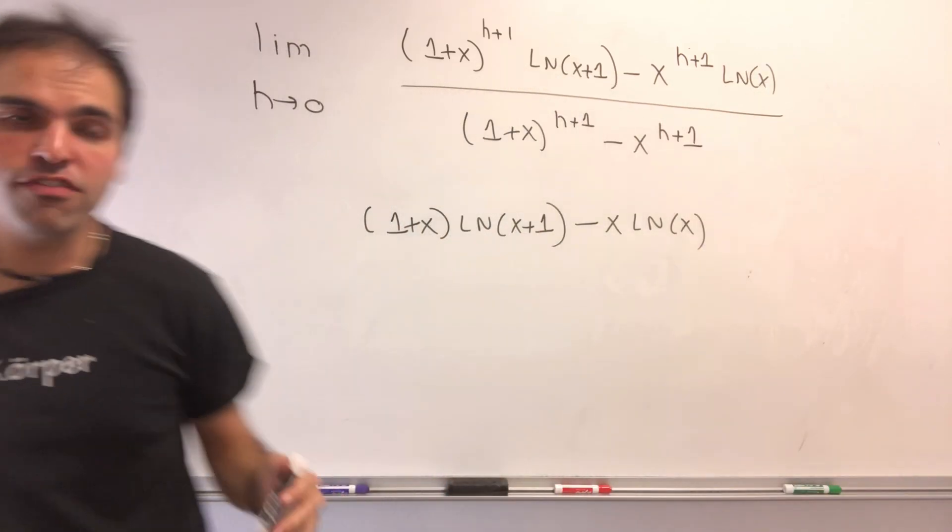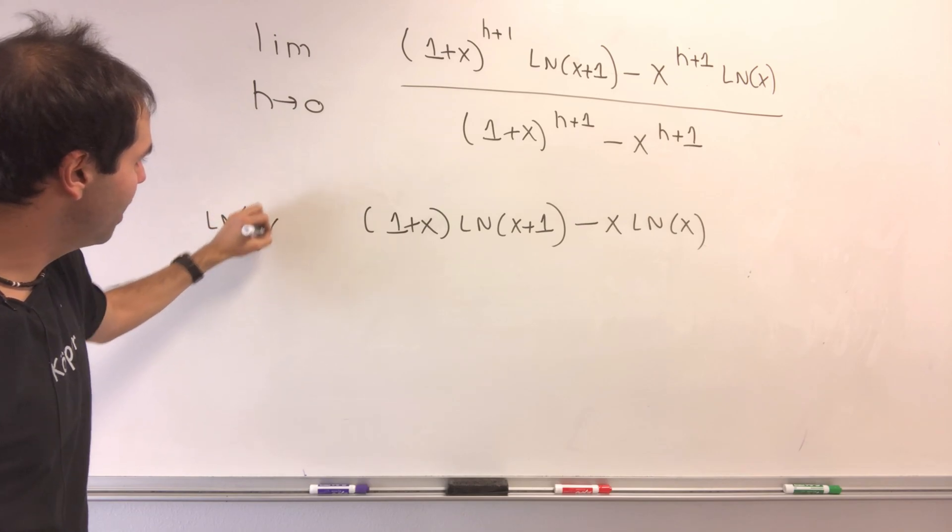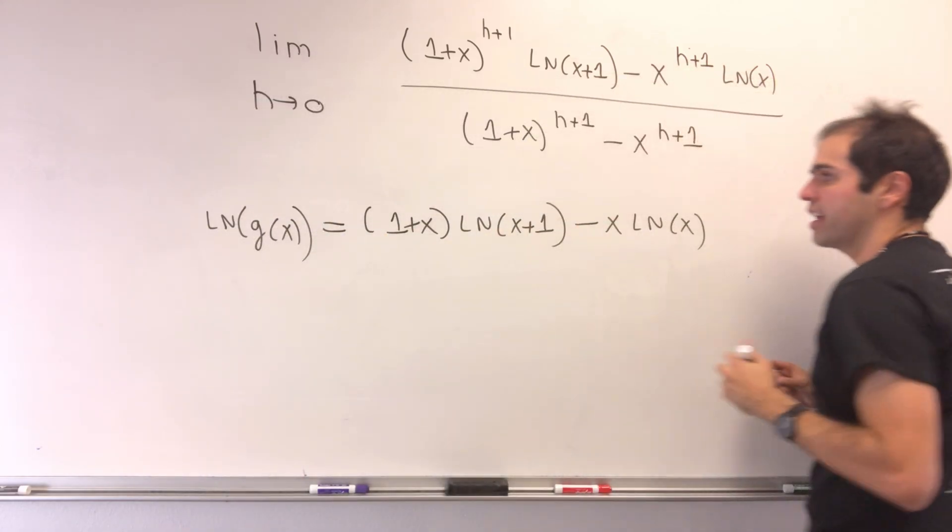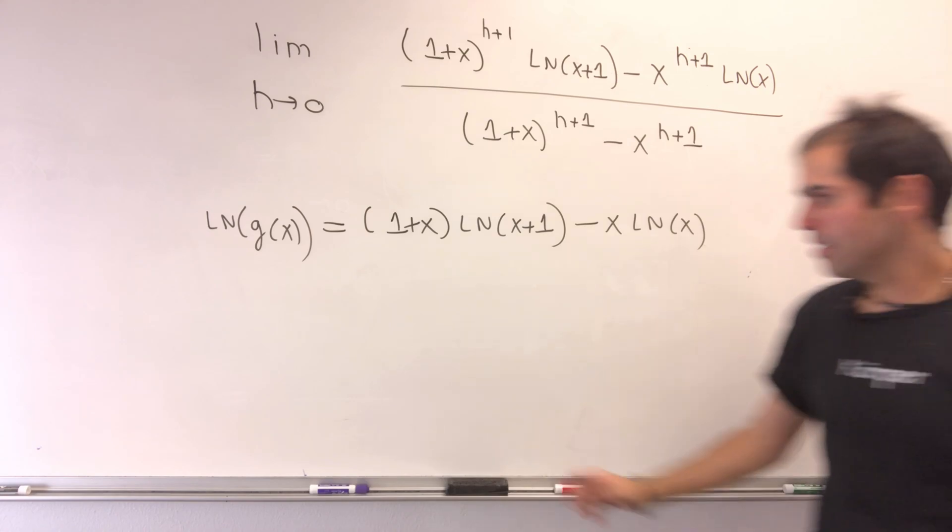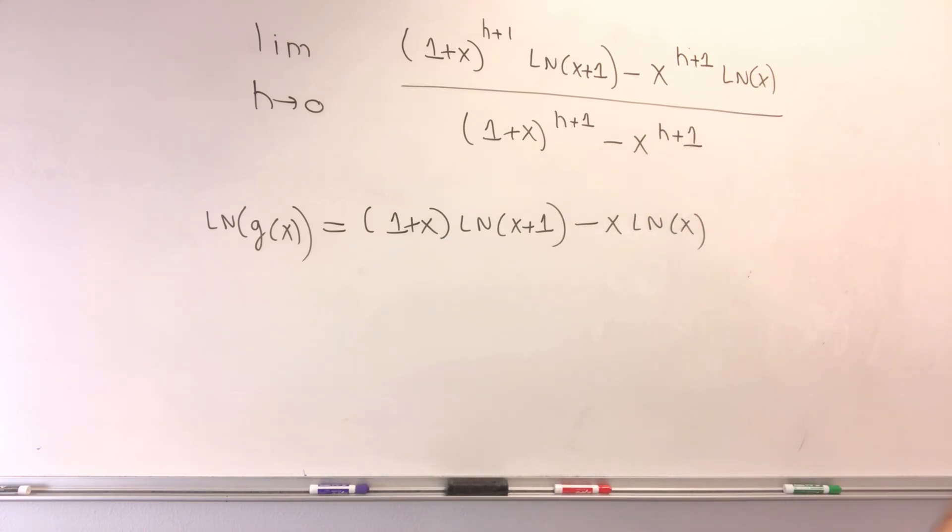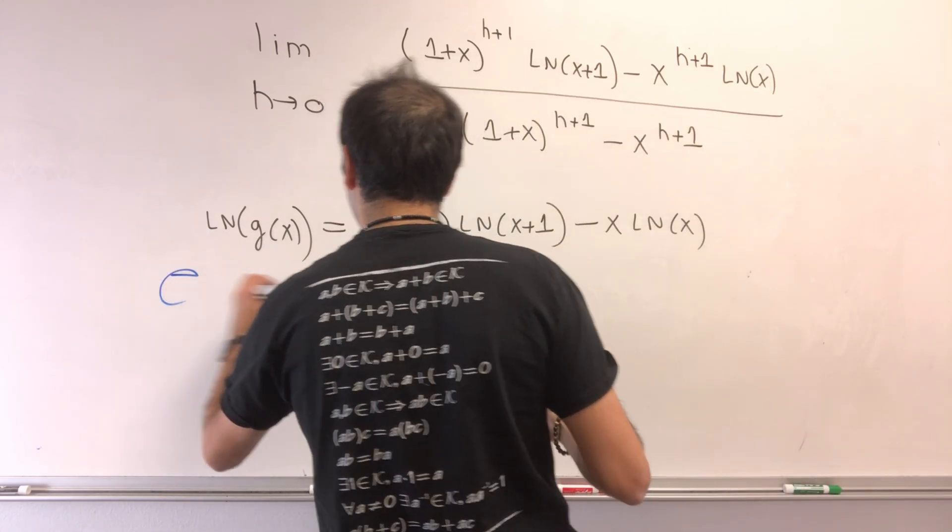So what have we shown? We've shown that ln of g of x, remember g was its limit, is just 1 plus x ln of x plus 1 minus x ln of x. And so we've calculated ln of g, and to get back to g, we'll just exponentiate. So let's do e of that on both sides.